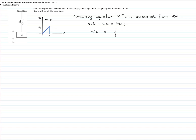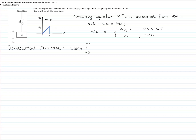The excitation force is a triangular pulse, and it is a piecewise function. The first part of the force is a ramp, and then after time equals capital T, the force is equal to zero. The definition of the convolution integral is: the response equals the integral from zero to a generic time t of the force evaluated at tau times h(t minus tau) d-tau, where h is the response to an impulse.